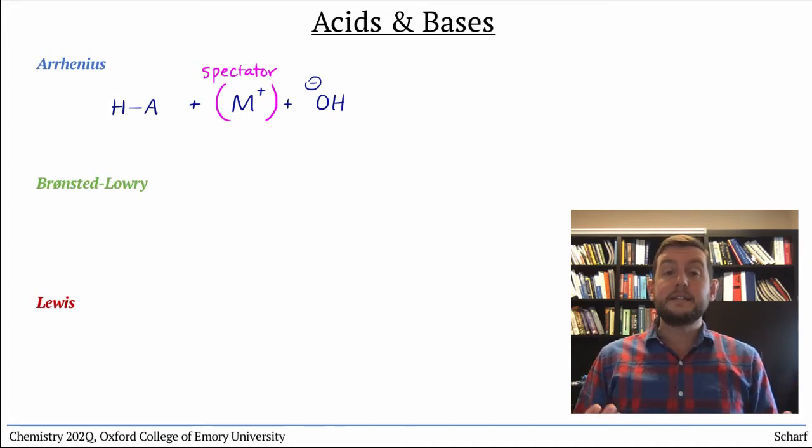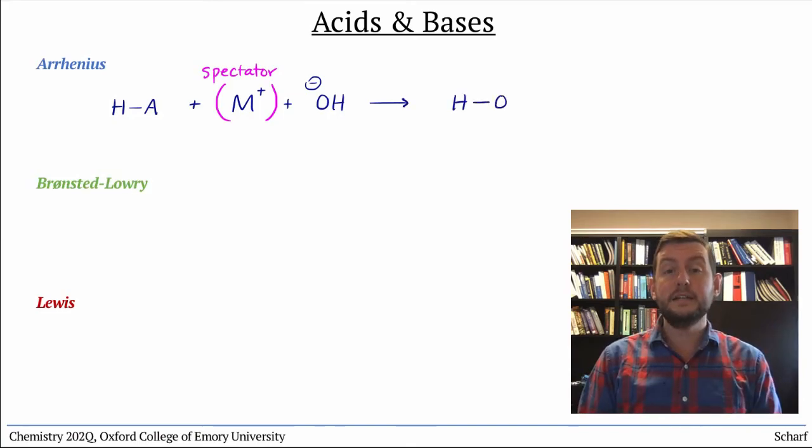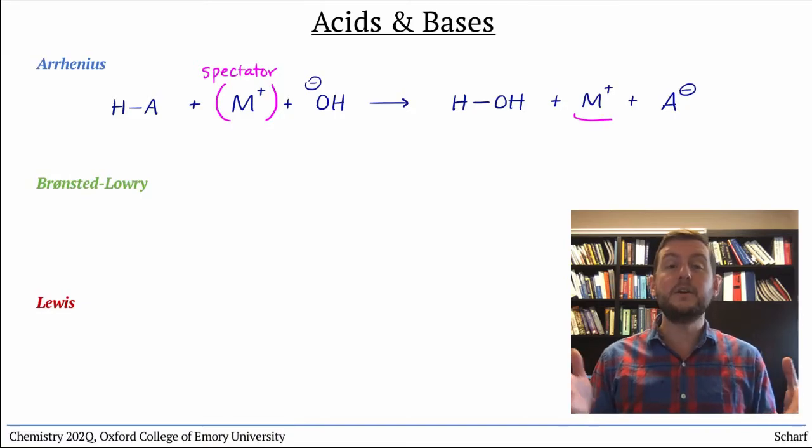When Arrhenius acids and bases react, the proton from the acid reacts with the hydroxide to make water, leaving behind A- and the metal cation, a pair of ions known as a salt.